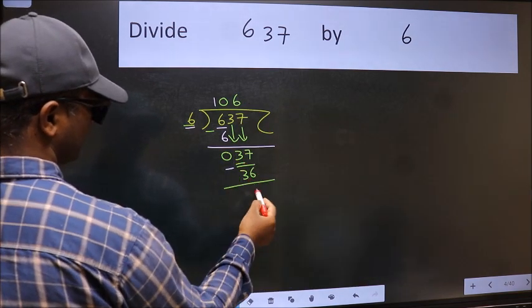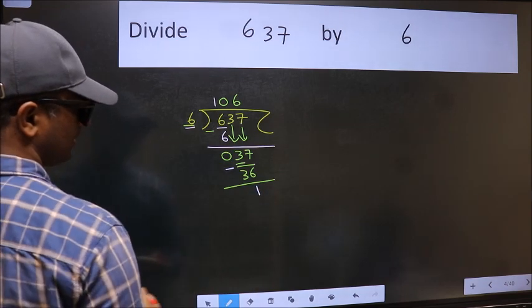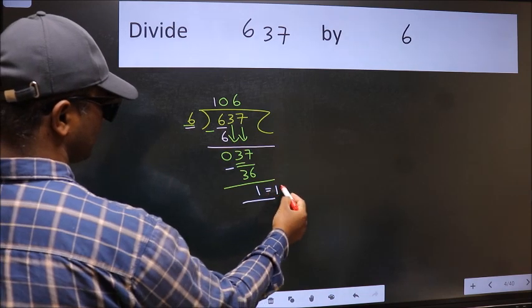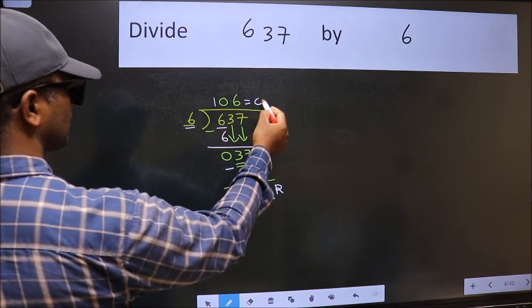No more numbers to bring down, so we stop here. This is our remainder, and this is our quotient.